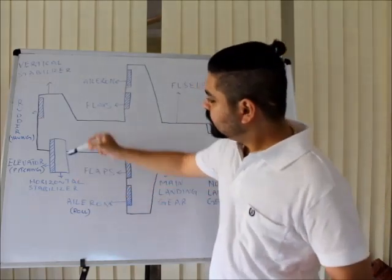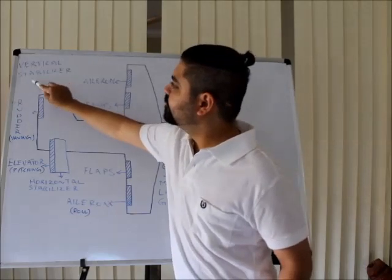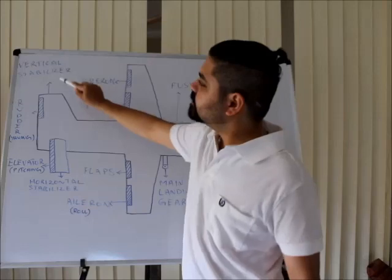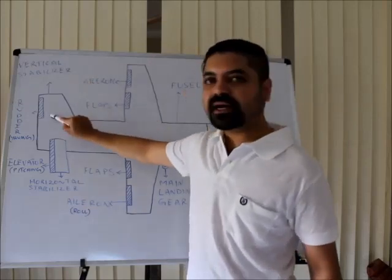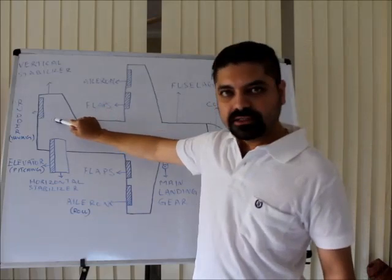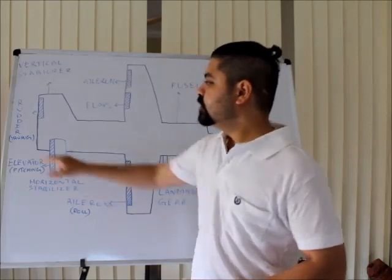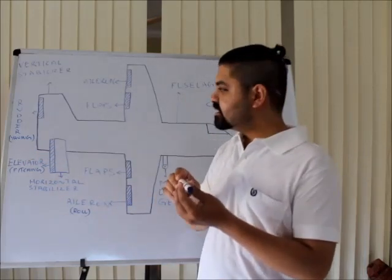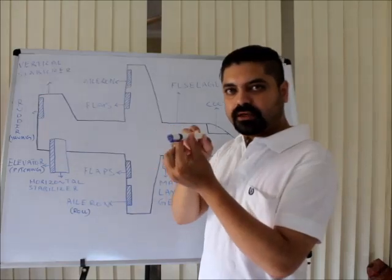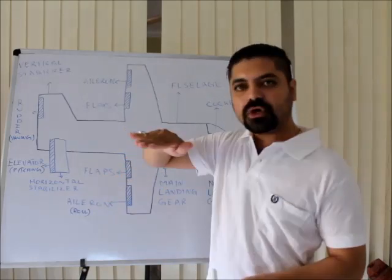This whole section at the tail is called the vertical stabilizer. Within it, the movable part is called the rudder. The rudder gives a movement to the aircraft called yawing — a side-to-side movement — whereas the previous one we saw was the rolling moment.